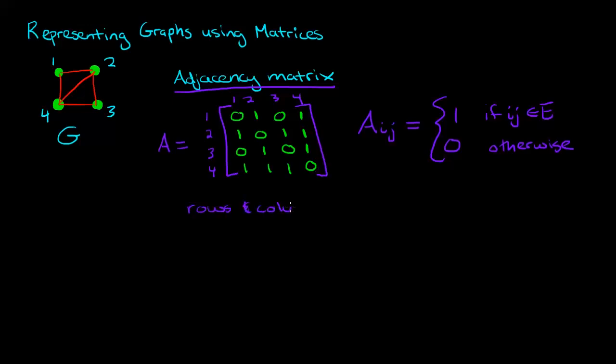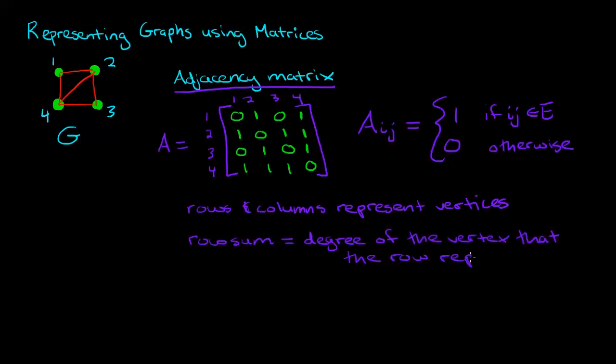Remember that in an adjacency matrix, rows and columns represent vertices. So if you look at the row sum, you're going to get the degree of the vertex that represents that row. So if we look at vertex 2 and we look at the row sum here, we sum all of these up, we get 3. And the row sum 3 tells us that vertex 2 has degree 3, which we can see clearly in the graph.